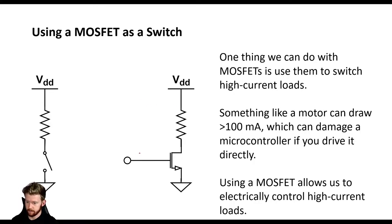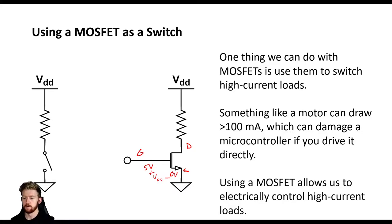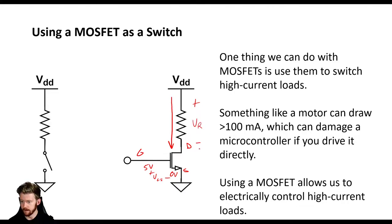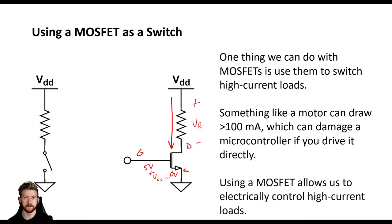This MOSFET has a gate, drain, and source — because this is an NMOS MOSFET. We can apply a signal to this gate: if we apply 5 volts to the gate and the source is at 0 volts, then VGS equals 5 volts, and it's going to try to supply as much current as it possibly can. If this is a low resistance load, a lot of current will start flowing, and most of the voltage will be dropped across the resistor, meaning VDS will be really low — which means we're operating in the triode region. MOSFETs give us a layer of abstraction and isolation from the microcontroller, helping protect it from blowing up due to excessive current.